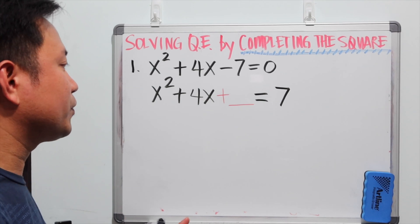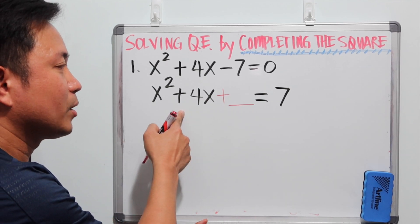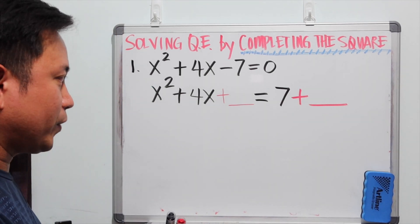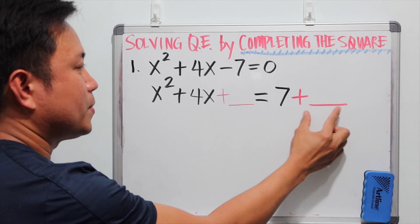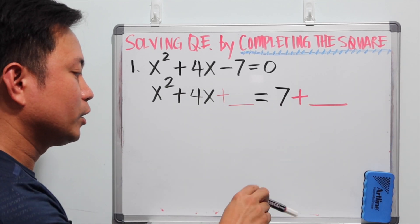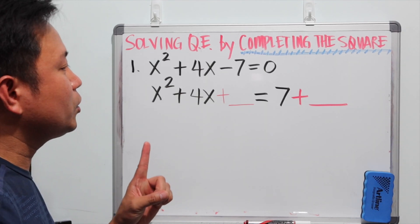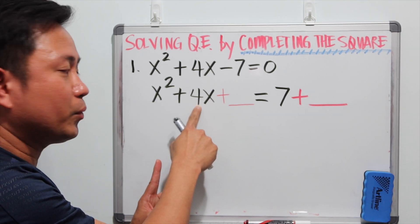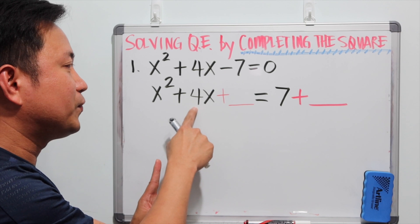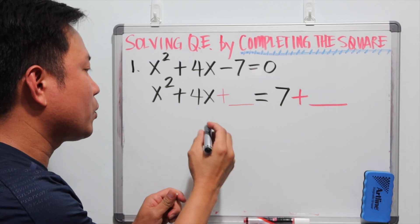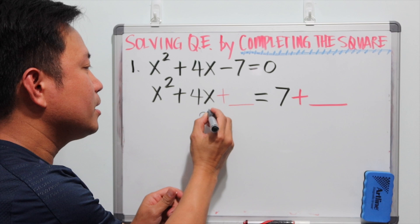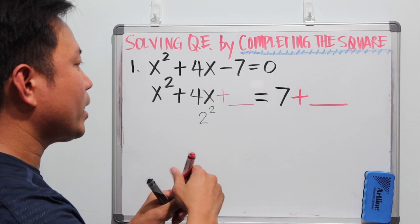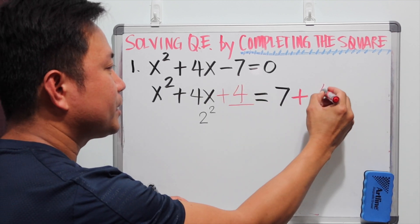To maintain the balance of this equation, whatever we add on the left side, we also need to add to the right side. To figure out what number to add on both sides, first you need to get half of the b value, which is the coefficient of x. So half of 4 is 2, and then square it. Half of 4 is 2, squared is 4, which means we need to add 4 to both sides of the equation.